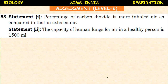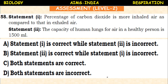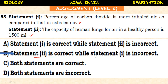Statement-based question: Statement 1 — the percentage of carbon dioxide is more in inhaled air compared to exhaled air. Statement 2 — the capacity of the human lungs in a healthy person is 1500 ml. Statement 1 is wrong, because exhaled air contains more CO2 than inhaled air. Statement 2 is correct. Therefore, statement 2 is correct while statement 1 is incorrect.